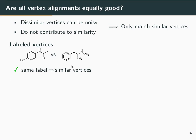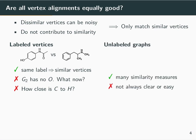Nevertheless, it's not clear how to treat if there is no oxygen, for example, in one of the two graphs, or how close a label of carbon would be to a label of hydrogen. In other cases, such labels do not exist whatsoever.